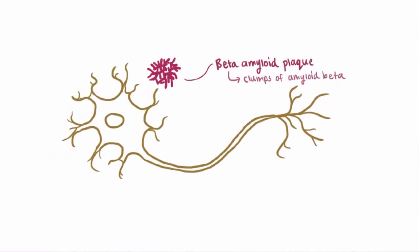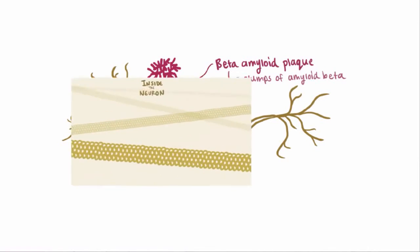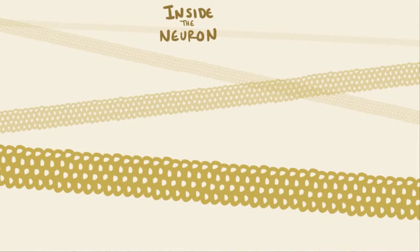Another big part of Alzheimer's disease, though, are tangles, and these are actually found inside the cell, as opposed to the beta-amyloid plaques.